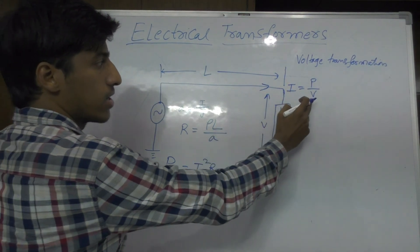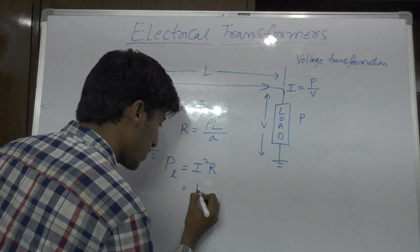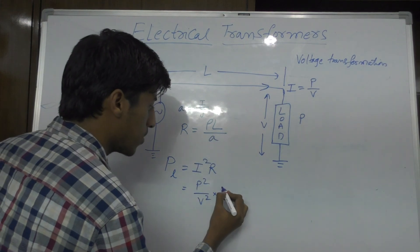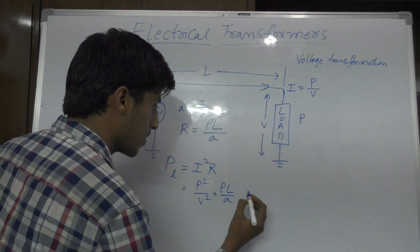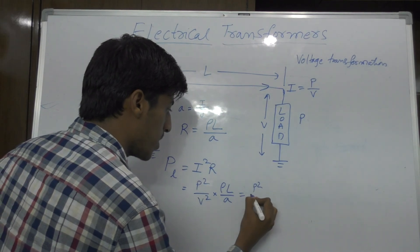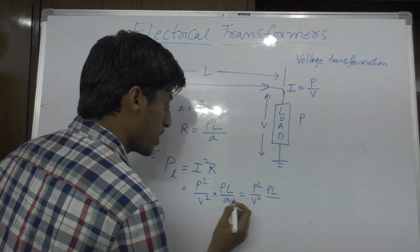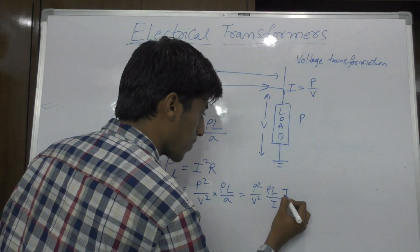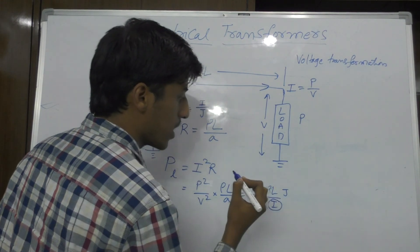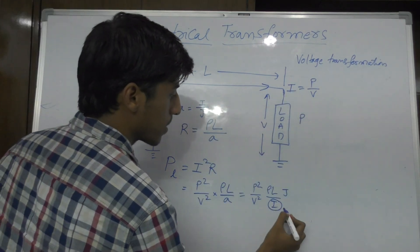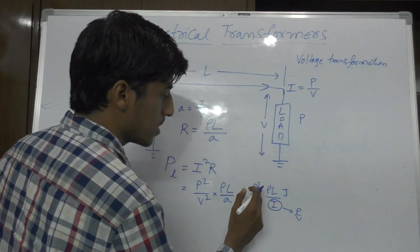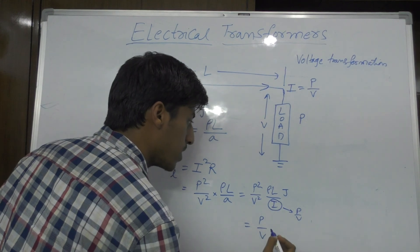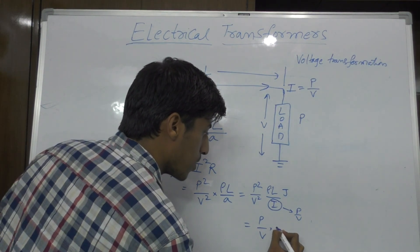In place of I, I can substitute P by V, so I will get P squared by V squared into resistance R, which is nothing but rho L by A. So P squared by V squared rho L by A. In place of A, I can substitute this I by J. Rho L by A, and in place of I, I can write again P by V. So here is P squared by V squared and here it is P by V. So finally we can get P by V into rho L J.